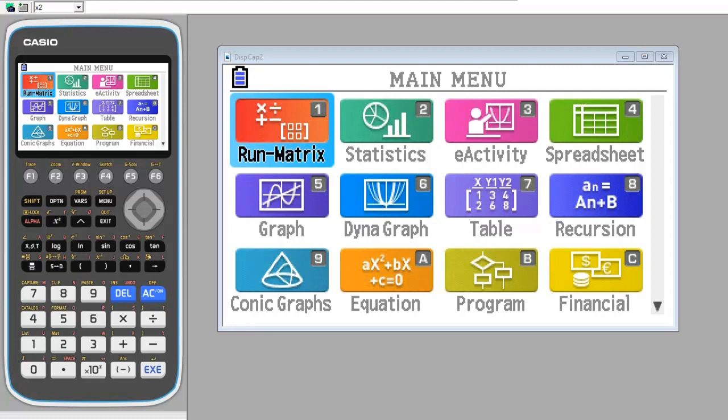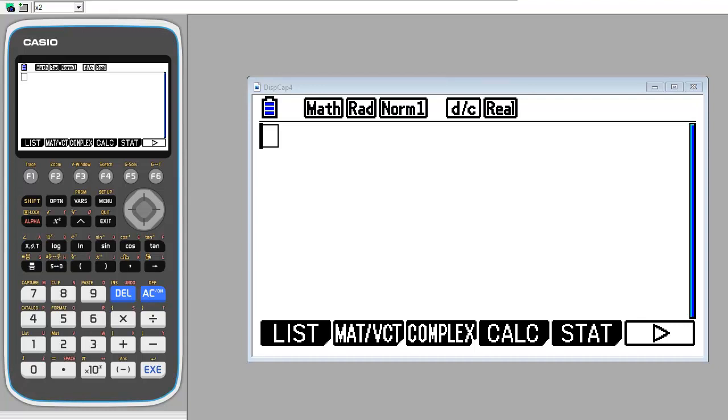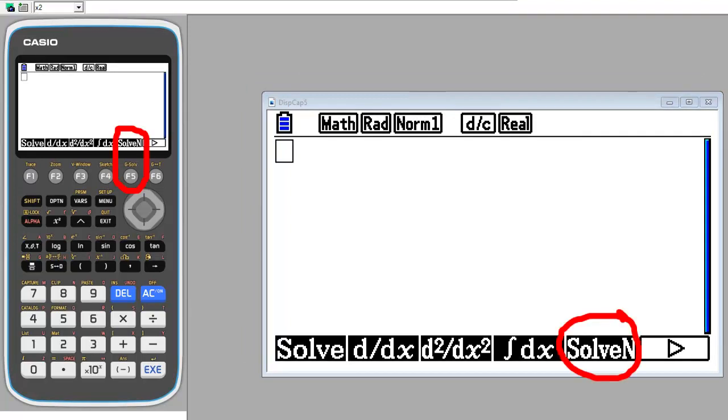Problem number 1. We're going to use the Run Matrix mode. So from the main menu, press the 1 button. From here, press the Option button. From here we want to go to Calc, so press the F4 button. We want to solve in, so press the F5 button.